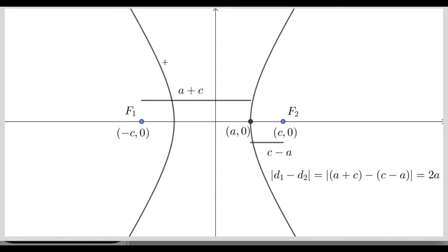Here's the picture. The distance from the center, which is (0,0), to the focus is c units, and the distance from the center to the vertex is a. So this line segment has a length of a plus c. The distance from the center to the focus is c, and the distance from the center to the vertex is a, so the leftover bit is c minus a. Taking the absolute value of d1 minus d2 gives (a plus c) minus (c minus a), which overall is just 2a. So now we know the constant difference is going to be 2a.